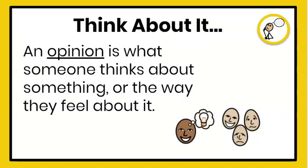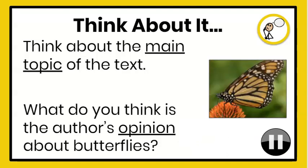Now let's think about the text. First, an opinion is what someone thinks about something or the way they feel about it. It is important to remember that people can agree or disagree with an opinion. So, let's think about the main topic of the text. What do you think is the author's opinion about butterflies? Think about it, pause the video, and come up with your answer.